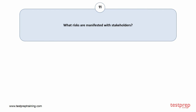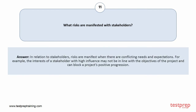Question number 11: Your answer is: In relation to stakeholders, risks are manifest when there are conflicting needs and expectations. For example, the interests of a stakeholder with high influence may not be in line with the objectives of the project and can block a project's positive progression.